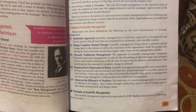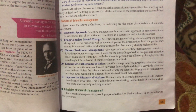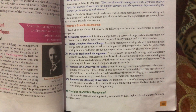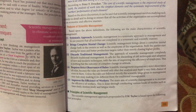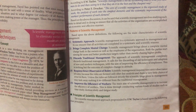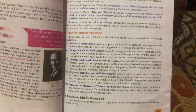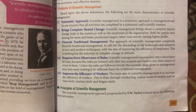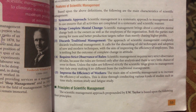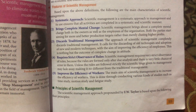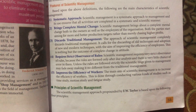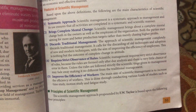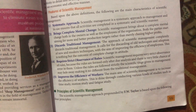Continuing with the fourth point, there must be a set of rules so that the objective can be achieved. The fifth feature is to improve the efficiency of workers. As we studied in traditional management — old techniques were discarded and new techniques were brought in — so the workers' efficiency will also increase as a result. Next are the principles of scientific management.